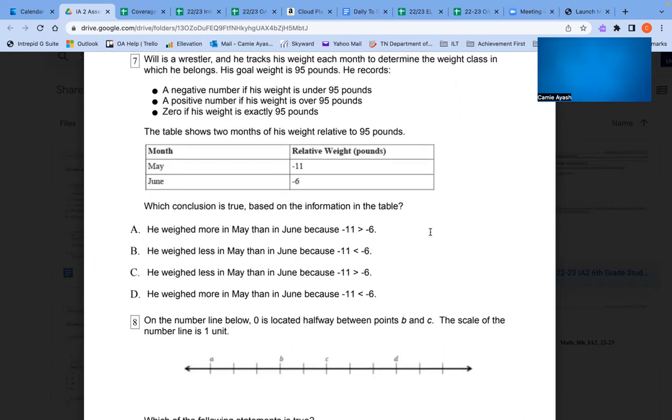Which conclusion is true based on the information in the table? A. He weighed more in May than in June because negative 11 is greater than negative 6. B. He weighed less in May than in June because negative 11 is less than negative 6. C. He weighed less in May than in June because negative 11 is greater than negative 6. D. He weighed more in May than in June because negative 11 is less than negative 6.